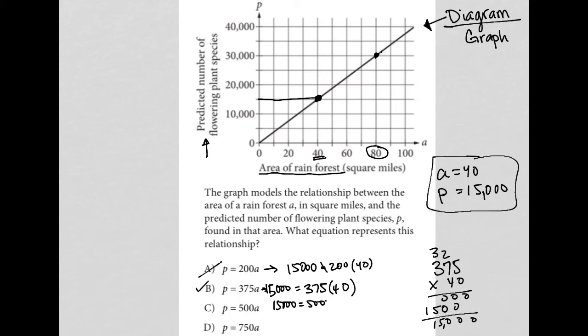And D, the same thing—750 times 40 is not going to be 15,000, so D is also incorrect. Choice B is the correct answer. All we did was choose a point on the graph and plug it in.